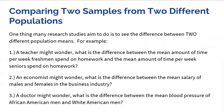Why would we possibly want to compare two samples from two different populations? Many research studies aim to see if there is a difference between two different population means. For example, a teacher might wonder what's the difference between the mean amount of time per week freshmen spend on homework and the mean amount of time seniors spend on homework. An economist might wonder what is the difference between the mean salary of females and males in the business industry. And a doctor might wonder what is the difference between the mean blood pressure of African-American men and white American men. So oftentimes, researchers aim to look at the difference between two populations.